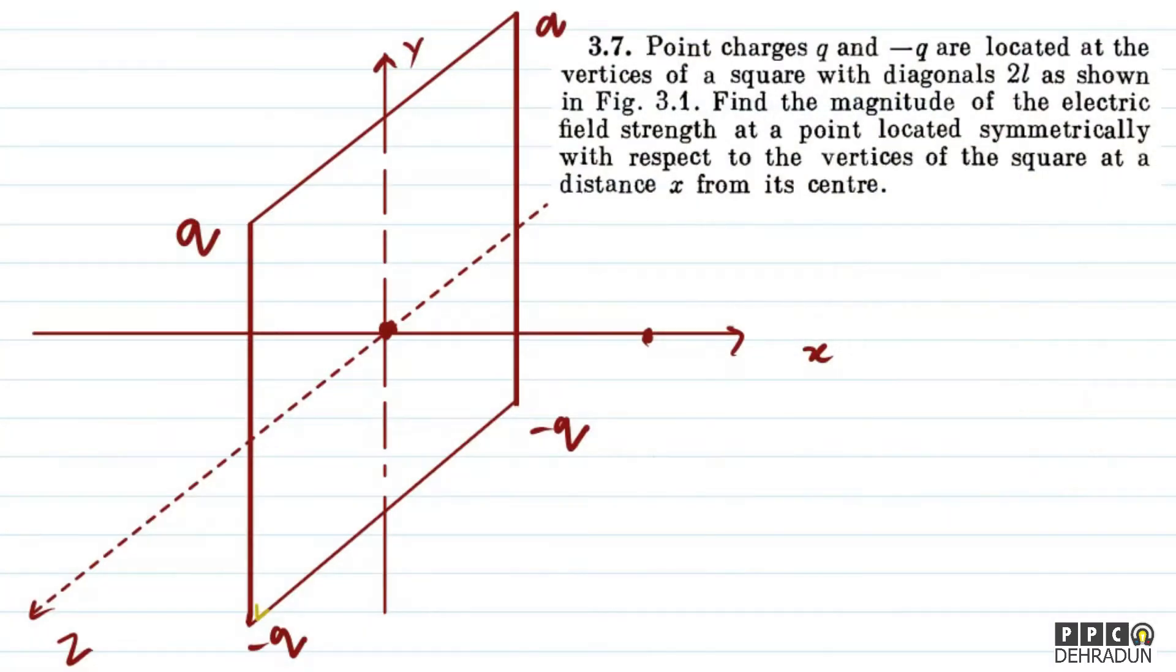So, in this question, we have four charges: two plus q and two minus q, and they form a square with diagonal length 2L. We need to find the magnitude of the electric field strength at a point located symmetrically with respect to the vertices of the square at a distance x from the center.